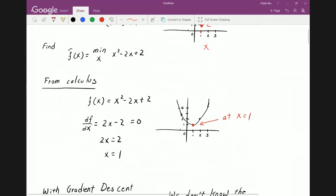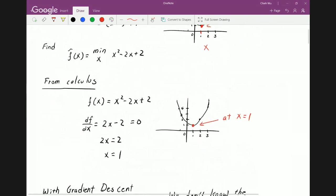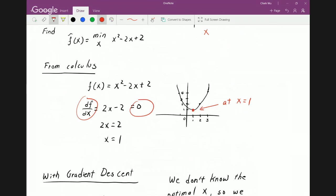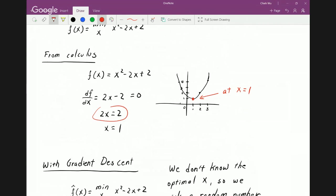Now, from calculus, we learned that all we have to do is find the derivative. We take the function, we take the derivative of this, and then set it to 0. So if we were to do that, we solve for x, and now x is equal to 1. Pretty simple.